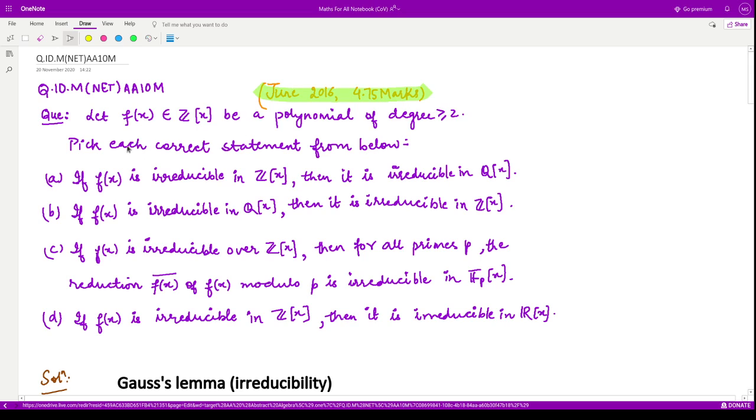This is a very simple question. They are asking let f belong to Z[x] be a polynomial of degree greater than or equal to 2. Then pick each correct statement from below.